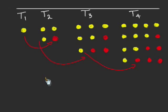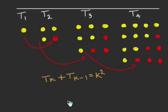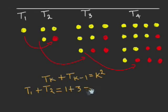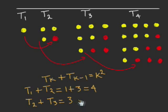We can express this algebraically with the following relation: T sub k plus T sub k minus 1 equal k square. What this formula is saying is that the sum of two consecutive triangular numbers is a square number. We can verify that this is true since T sub 1 plus T sub 2 equal 1 plus 3 which is equal to 4 and also T sub 2 plus T sub 3 equal 3 plus 6 which is equal to 9.